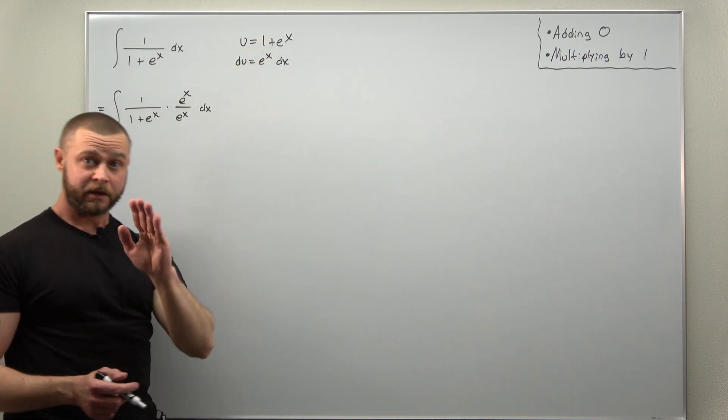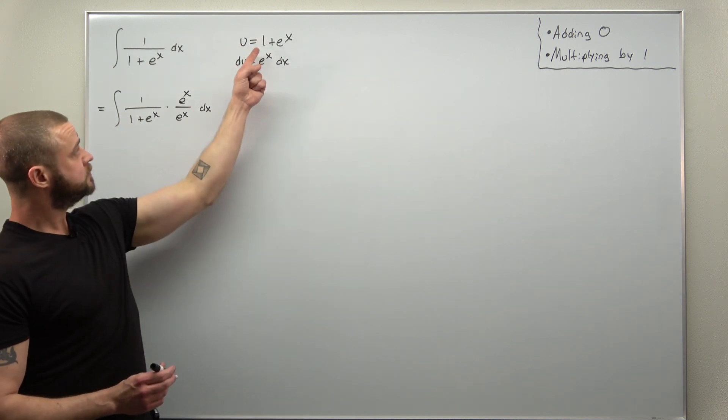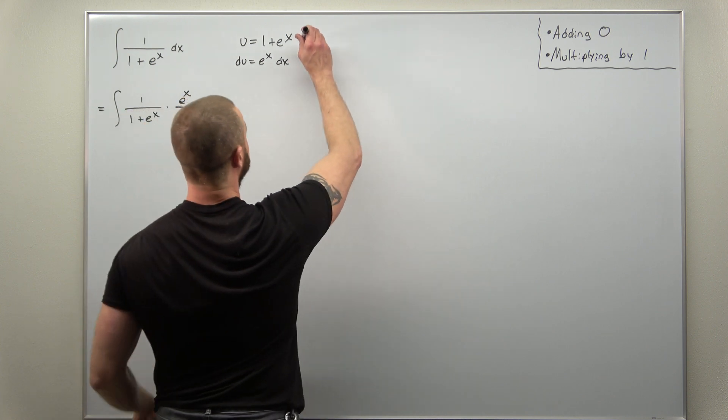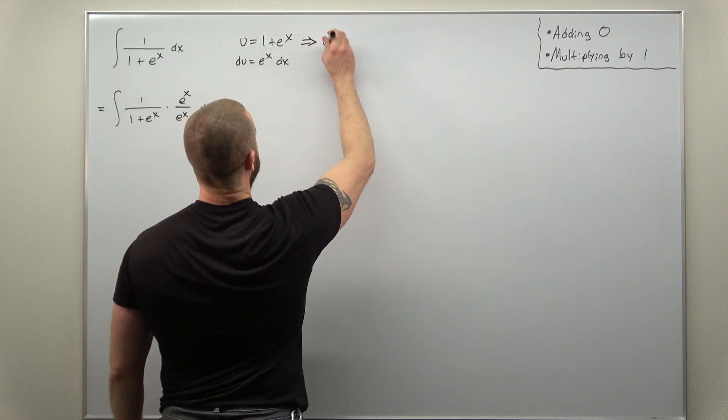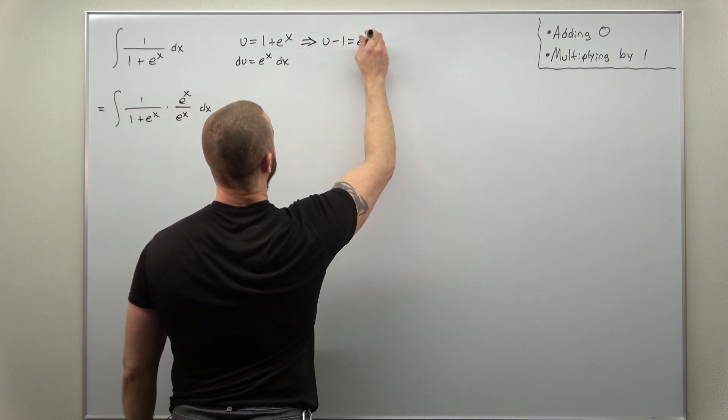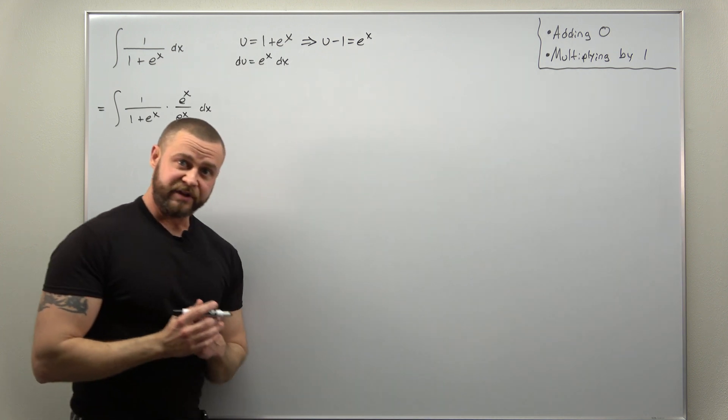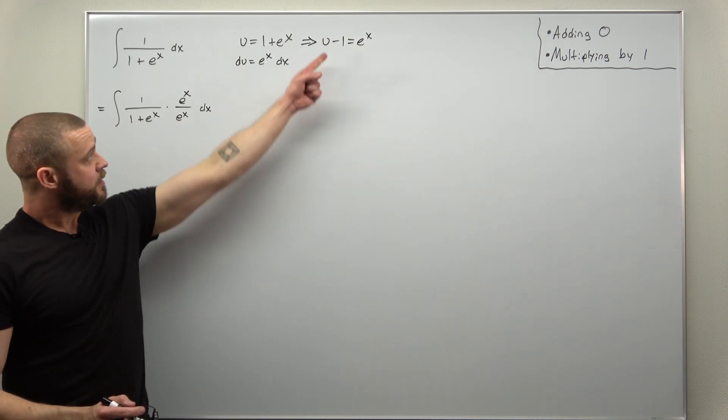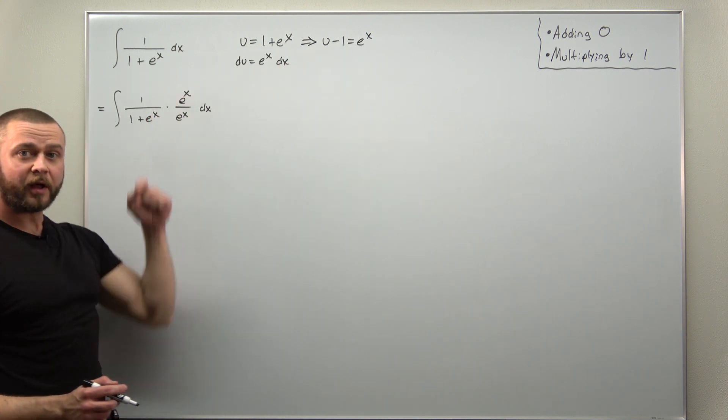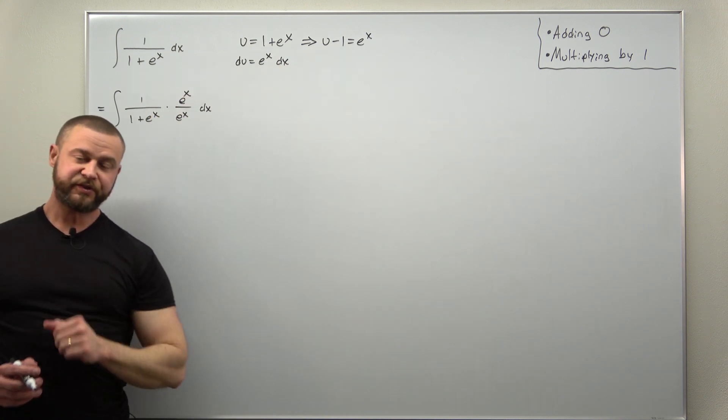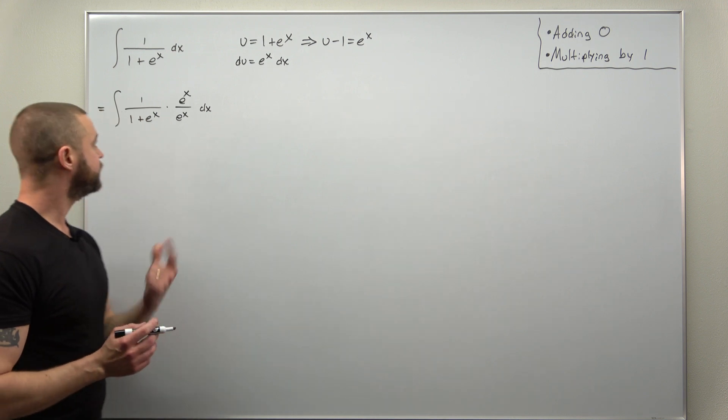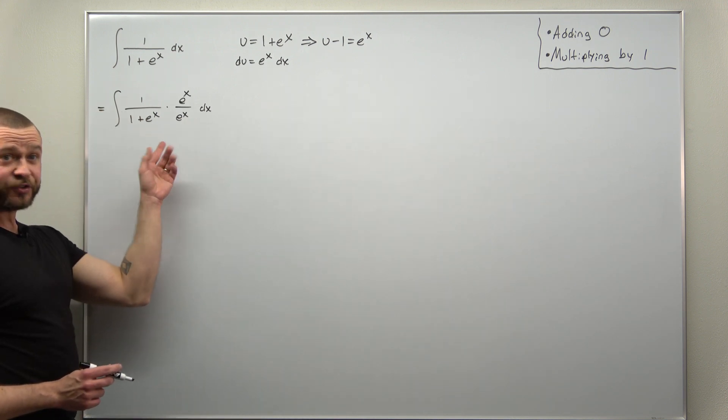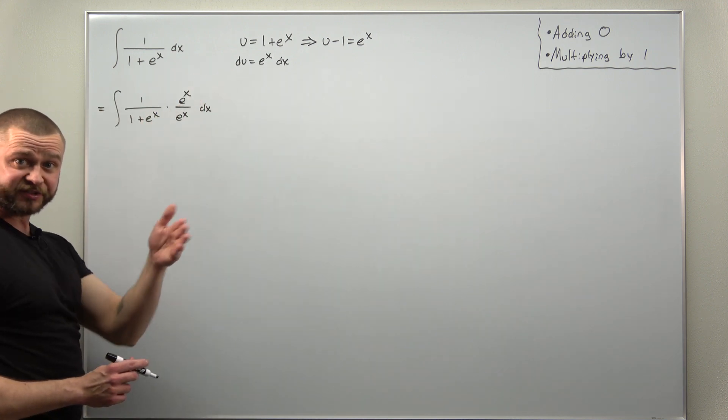So we can do that just by subtracting one, and we'll get u minus one equals e to the x. And with that trick as well as multiplying by one, this integral will fall into place. Now I'm just going to rewrite this so that way it's a little bit more obvious how the pieces fall where they should for converting to u.